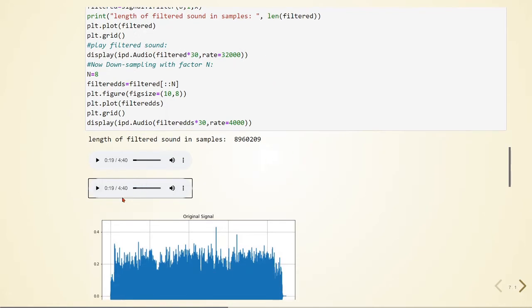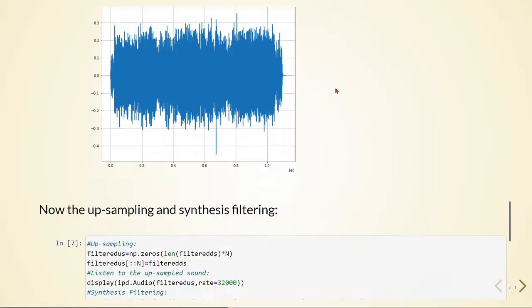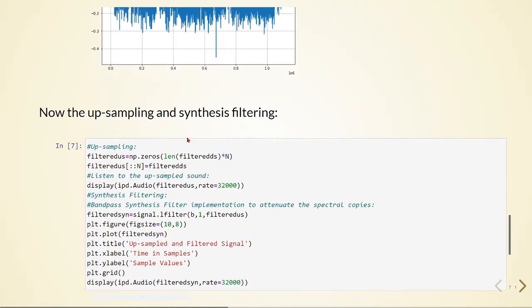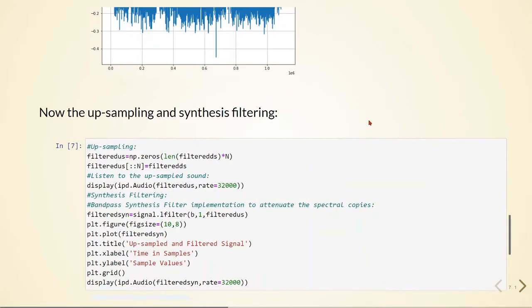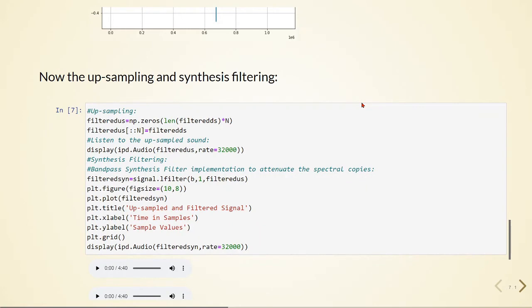And we obtain this filtered and downsampled audio data. And now we are going to insert zeros in between these samples from this file here. This is the upsampling. And then we will apply another filter.